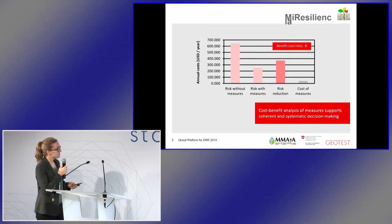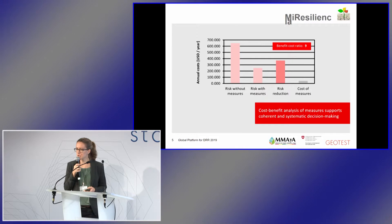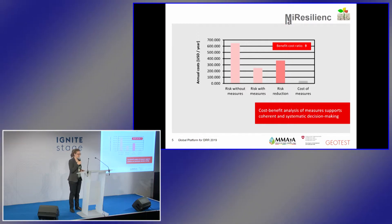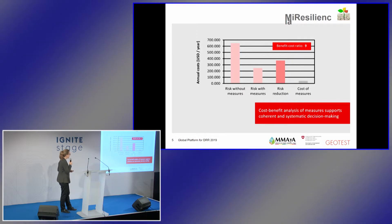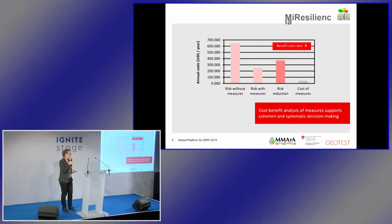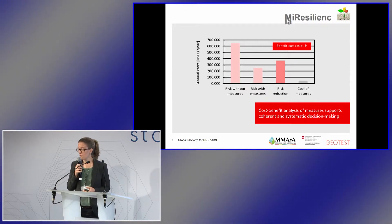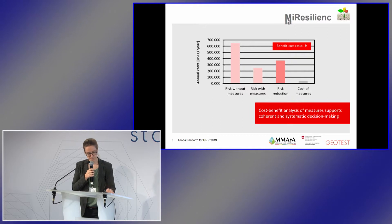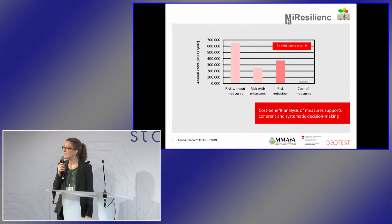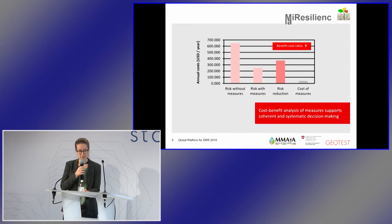It's simple. The difference between the risk without the measure and the risk with the measure yields the risk reduction, which is the benefit of the measure. If we divide the annual benefit — in our case here almost 400,000 US dollars per year — by the cost of the measure, we obtain the benefit-cost ratio, which is above one for economically viable measures. The benefit-cost ratio determines economic efficiency and cost-effectiveness, and can therefore be a criteria to indicate whether a measure should be implemented or not.